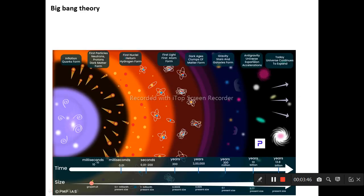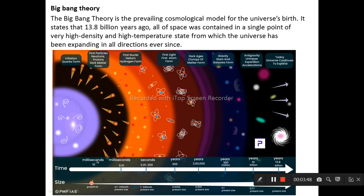The Big Bang theory is the prevailing cosmological model for the universe's birth. It says that 13.8 billion years ago, all the space was contained in a single point of very high density and high temperature state, from which the universe has been expanding in all directions ever since.